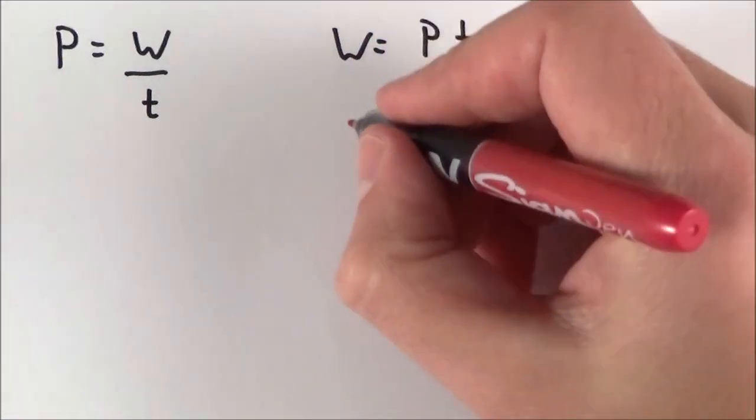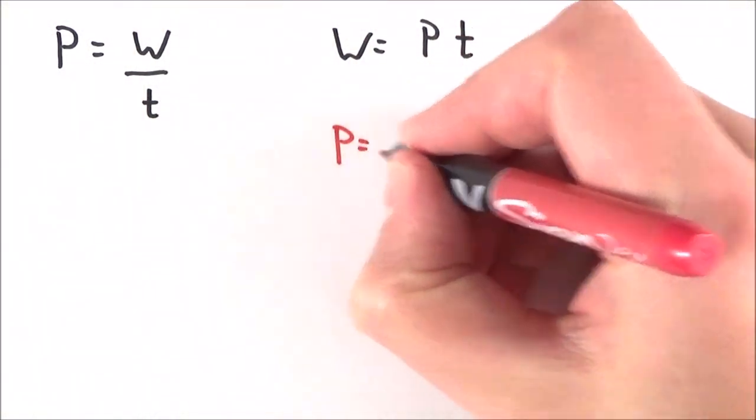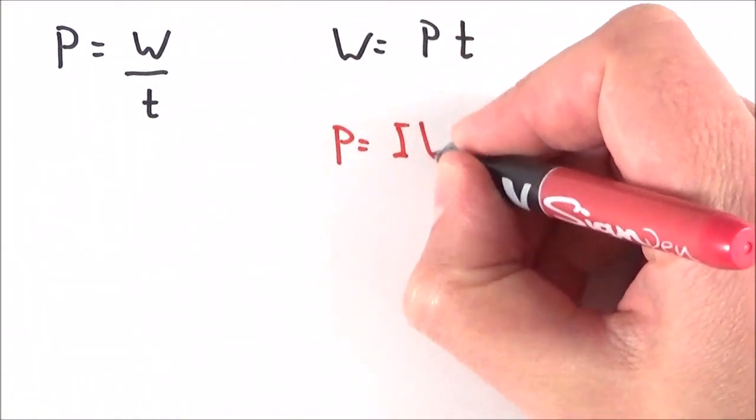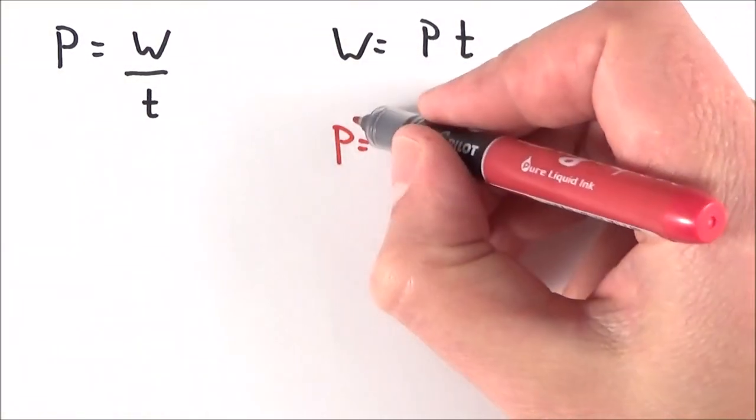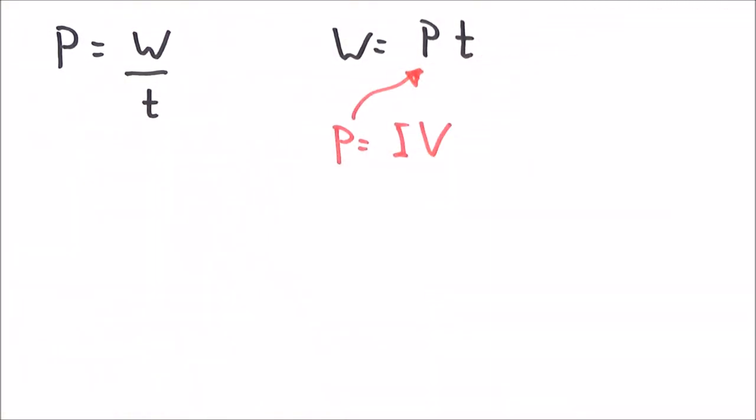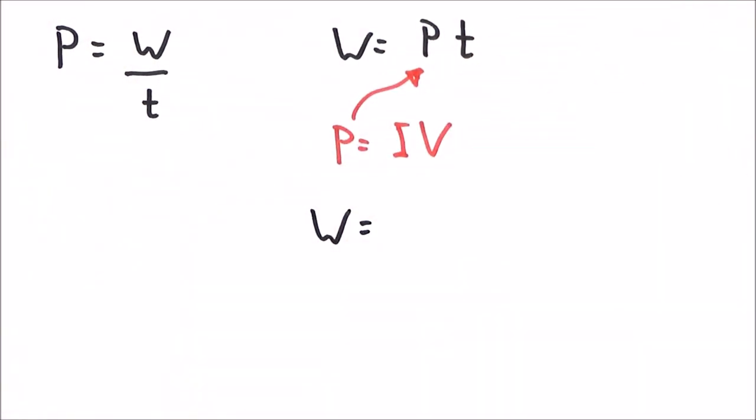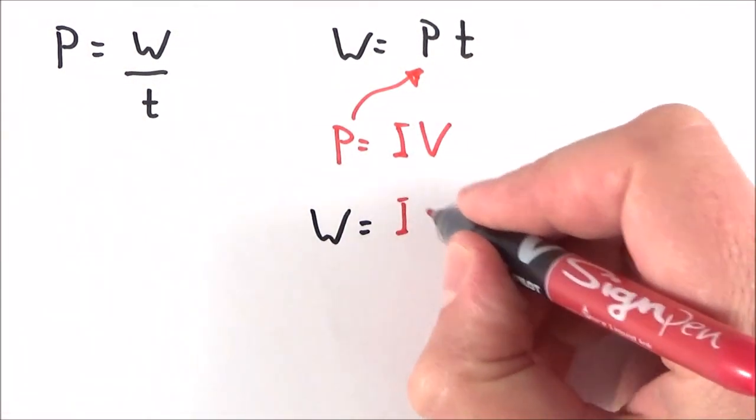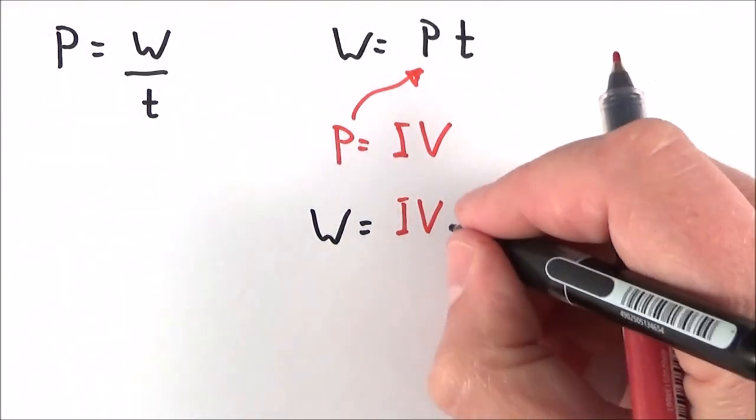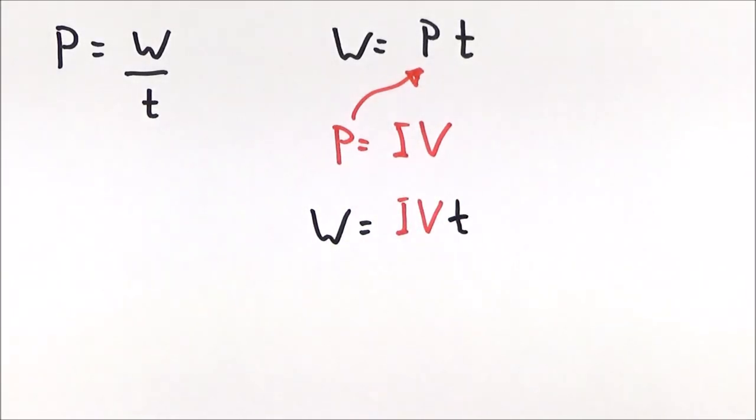But if we think about electrical circuits, we know that the power is equal to the current multiplied by the potential difference. Therefore we can put this into this equation up here. What we can say then is the energy transferred is equal to power, which is I multiplied by V, multiplied by the time at which that device is working for.